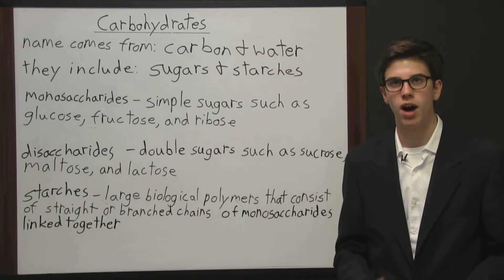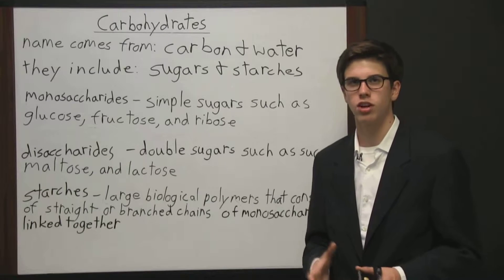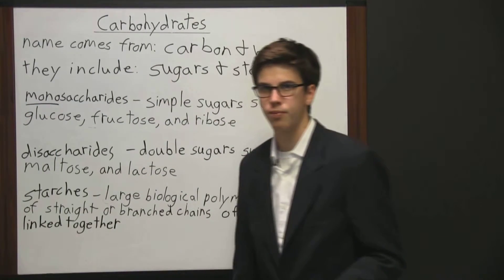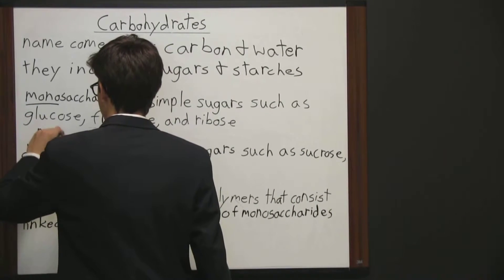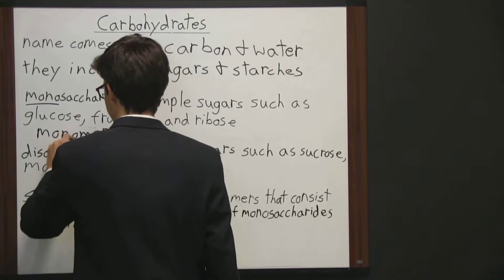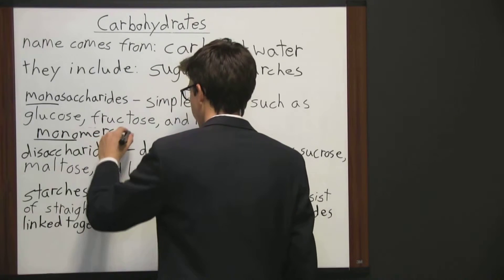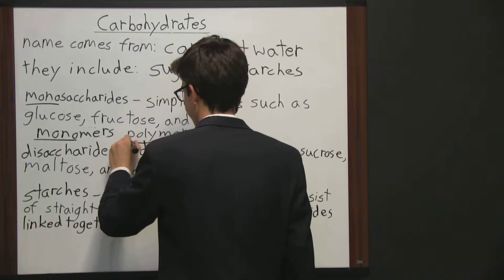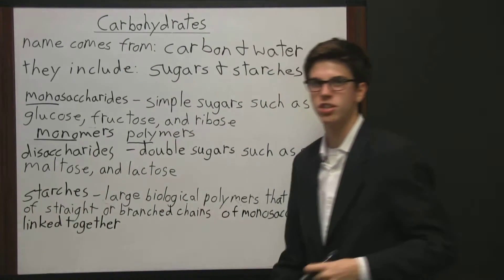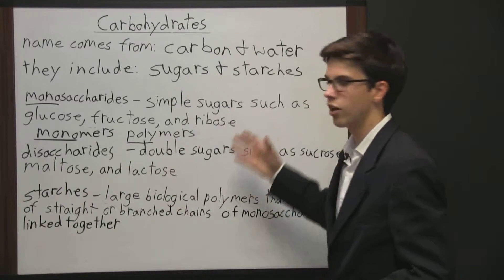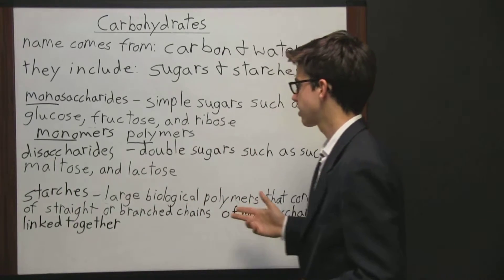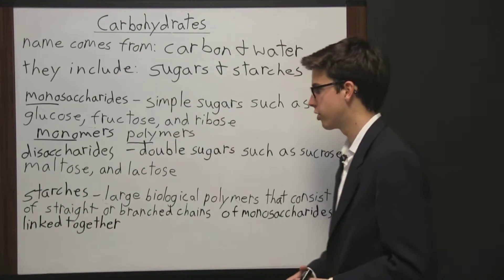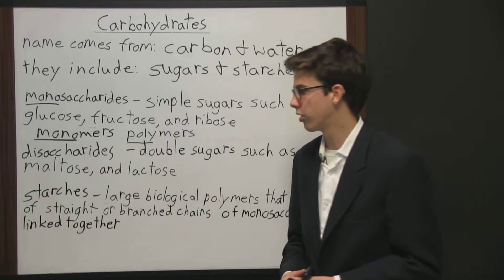We call these sugars monomers because they are monomers for more complex ones. Notice that in monosaccharides we have the prefix mono, which means one, and monomers also has that prefix of mono meaning one. You may also be familiar with polymers, which has the prefix poly meaning more than one. These sugars are single molecules that are the building blocks that join together with other molecules to form polymers.